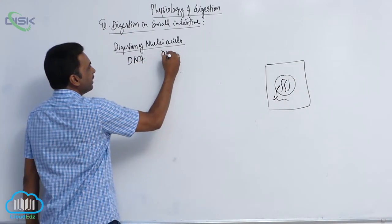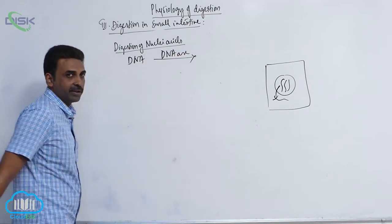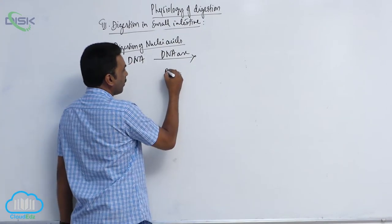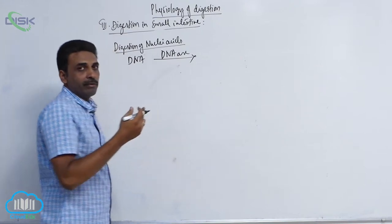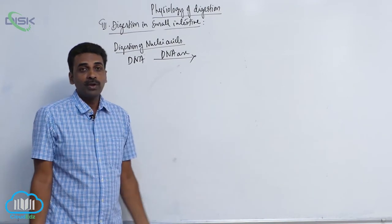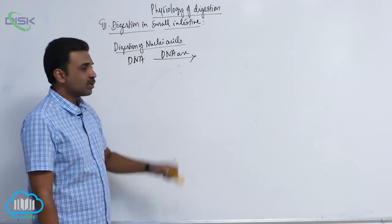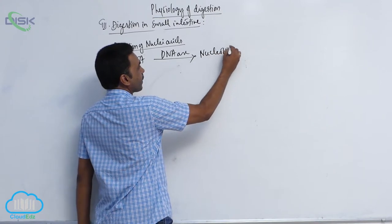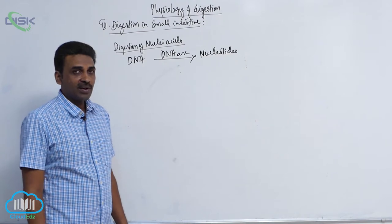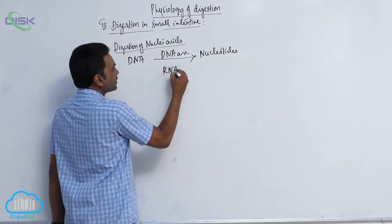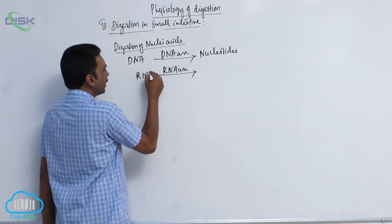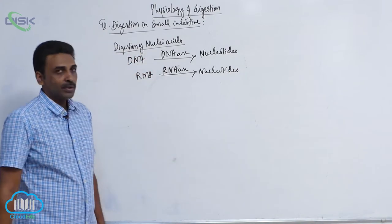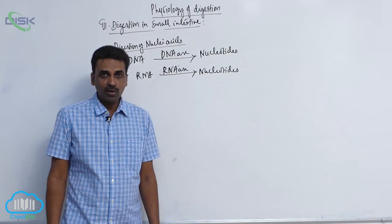There is an enzyme called DNase which acts on DNA. DNA is a double chain of polynucleotides; when DNase acts on DNA, it results in the breakdown and separation of individual nucleotides. Similarly, RNase acts on RNA and produces nucleotides. These two enzymes — DNase and RNase — are together called nucleases.